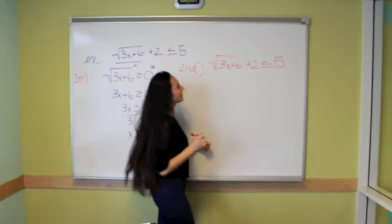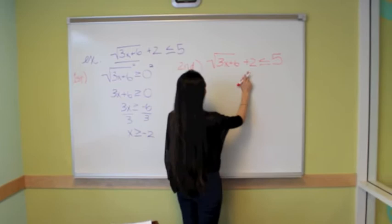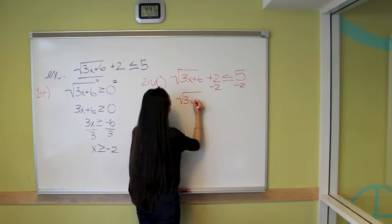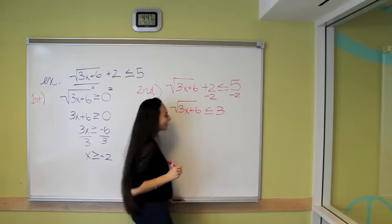Now that we have that written again, we're just going to solve it the same way that you would solve a radical expression. So we want to isolate the radicand. So we're going to subtract 2 on both sides. Then we get the square root of 3x plus 6. This is a 3.